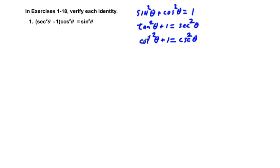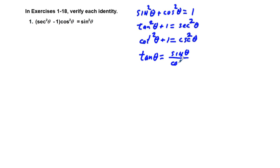What really helps me remember this is the letter association — cotangent goes with cosecant. And then we have our quotient identities, which are tangent theta equals sine theta over cosine theta, and cotangent theta is equal to the reciprocal of tangent, which is cosine theta over sine theta.